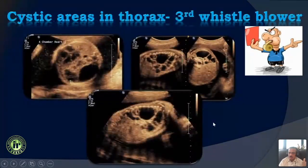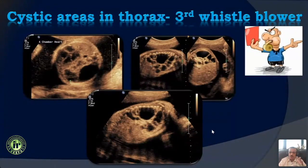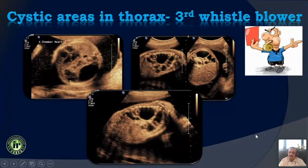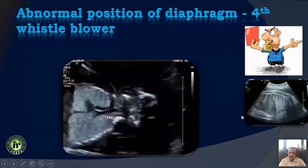The third whistleblower is the presence of cystic areas within the lungs. Normally we have a uniform appearance of the lungs, but if you see cystic areas, that is the third whistleblower that something is wrong in the lungs or in the thorax.